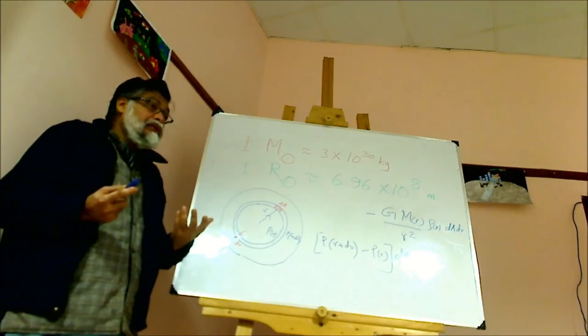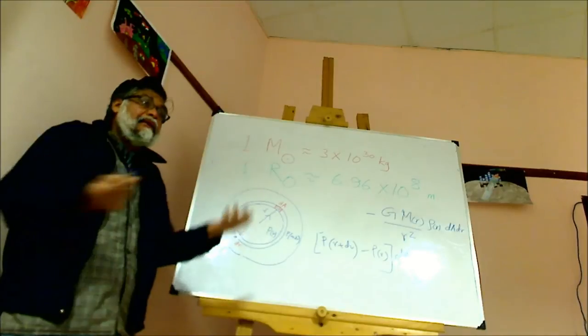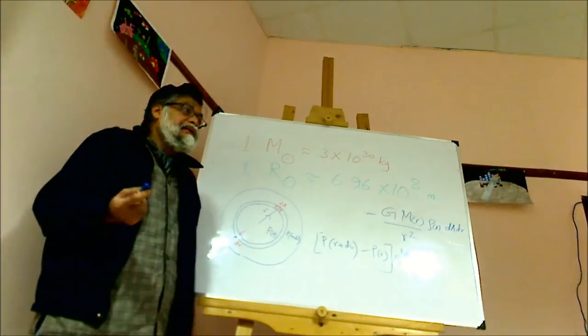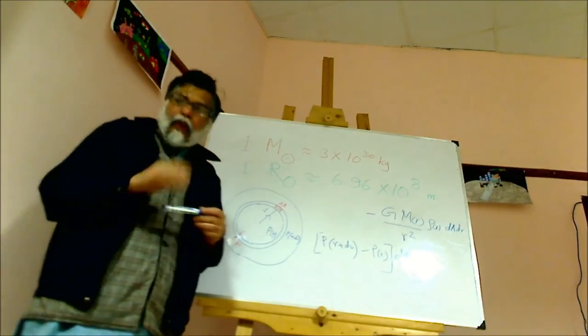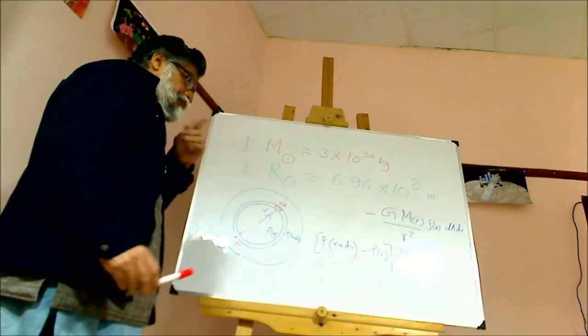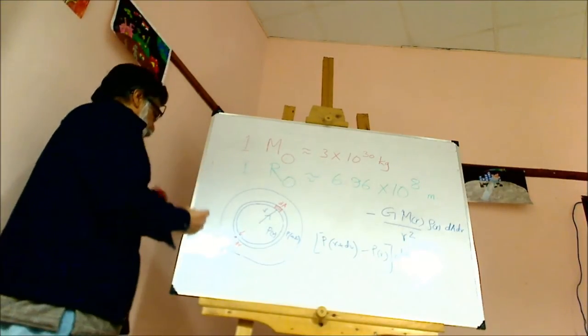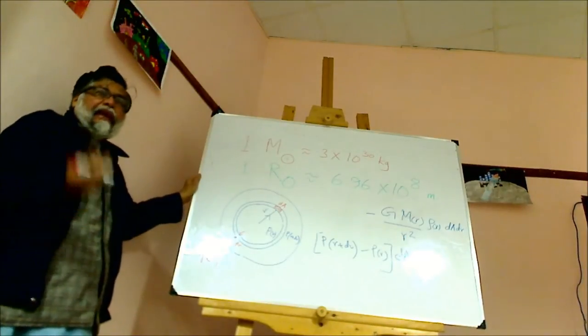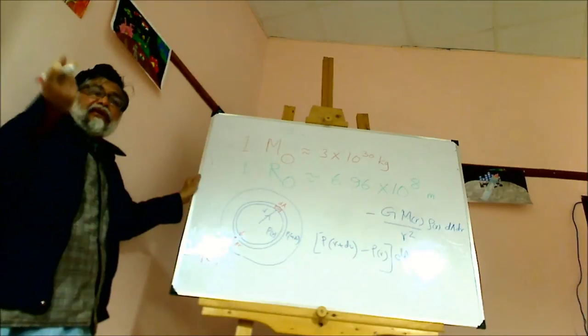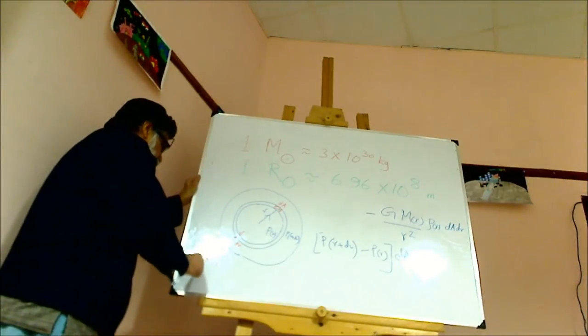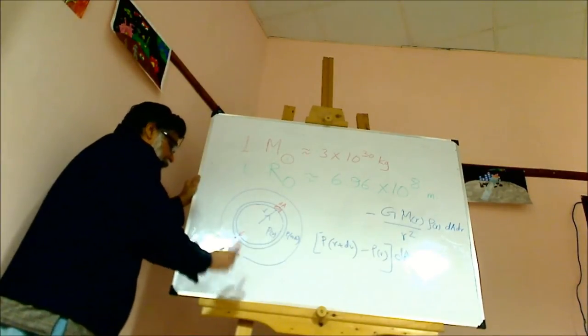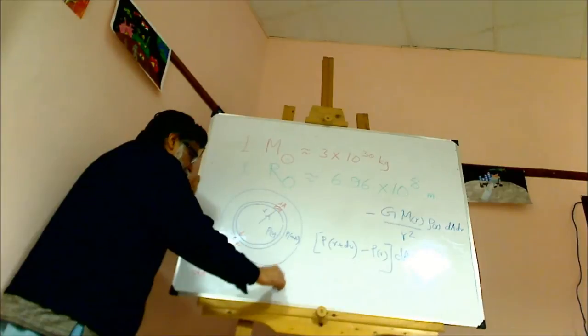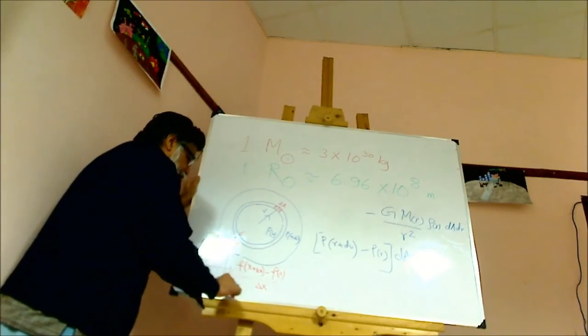How do you write P of R plus dR in terms of P of R and the derivative of P of R? You do a Taylor expansion. Consider a real function f of x. What is the meaning of df/dx? df/dx is nothing but the limit as delta x tends to zero of [f(x + delta x) - f(x)] divided by delta x.